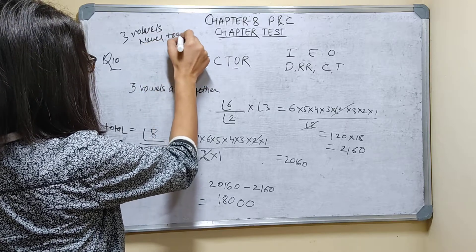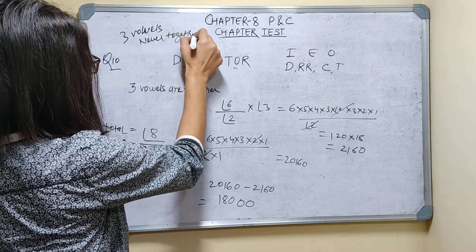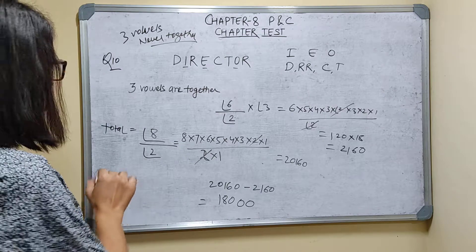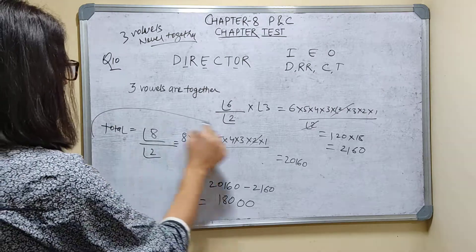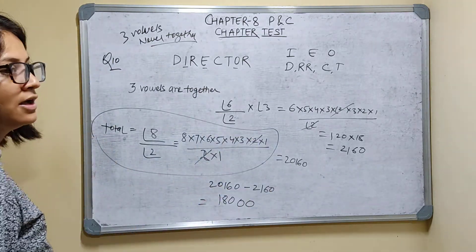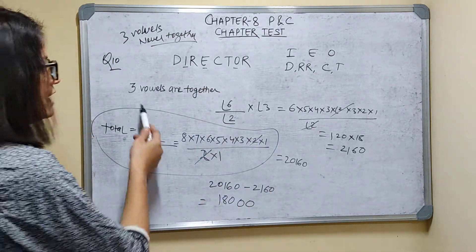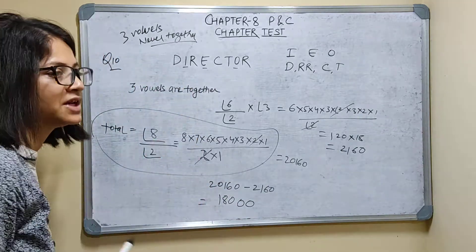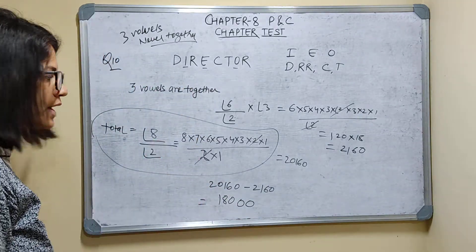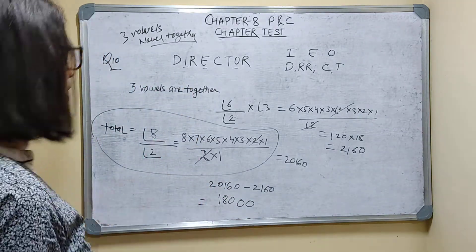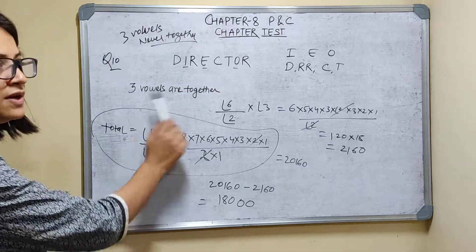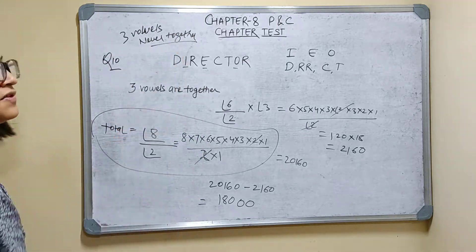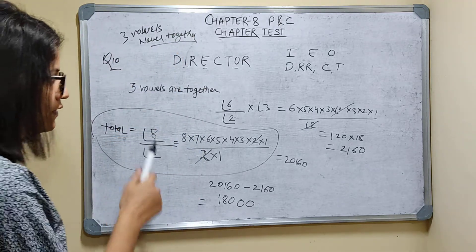So how will I do this? All the three vowels are never together. So I will find all the total arrangements and then I will find all three vowels together. So I will subtract to get all the three vowels are not together. Total arrangements minus arrangements when three vowels are together will give all the three vowels are never together.